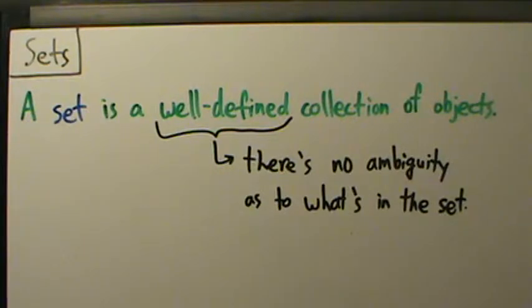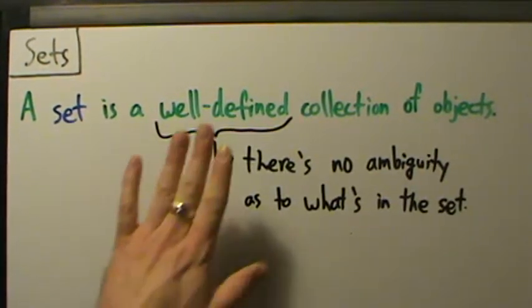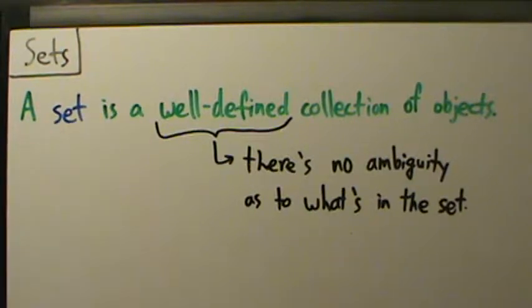But if we say something like a collection of really bad movies, that's really not well-defined because what's really bad to somebody might not be really bad to somebody else. It's too subjective. When we say a really bad movie, it's a subjective term, so it's not well-defined. So it's not a set in a mathematical context.